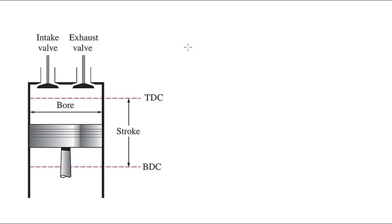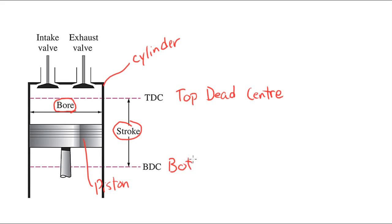Here's a diagram of an engine cylinder, and you can see there's several terms labeled here. So there's the piston inside the cylinder, we have the diameter of the cylinder is called the bore, and the stroke is the length which the piston moves up and down, from the top point which is called top dead center, to the bottom point which is called bottom dead center.